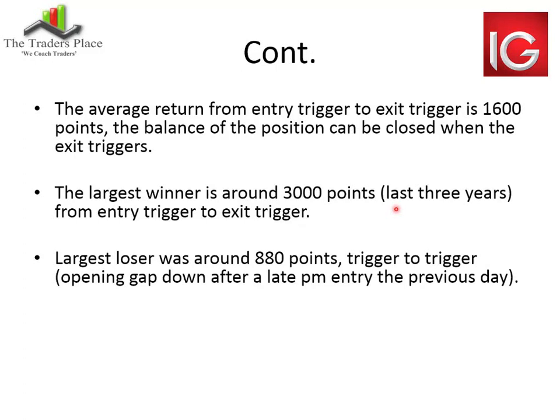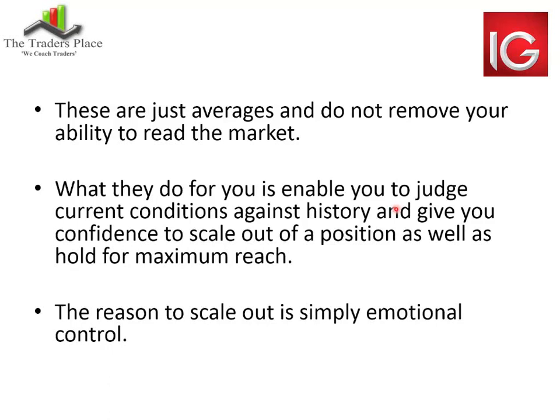The largest winner I've had is around 3,000 points in the last three years, trigger to trigger. The largest loser was 880 points — it happened late in the afternoon, entered the trade, the next day it gapped against me 800 points before my system told me to exit. Knowing that gives me confidence that my biggest loser in three years is 880 points a contract. I can work out how many contracts to take to handle the worst loser statistically. That gives confidence to know your average return will be 1,200 points — or you could simply make that your target for every trade, though you'd miss the 1,600 or 1,800 points.